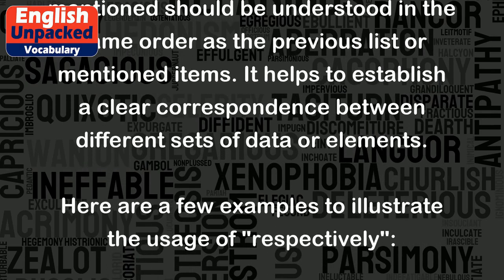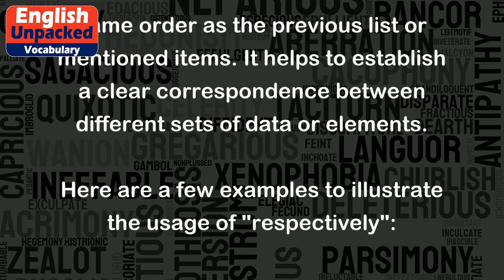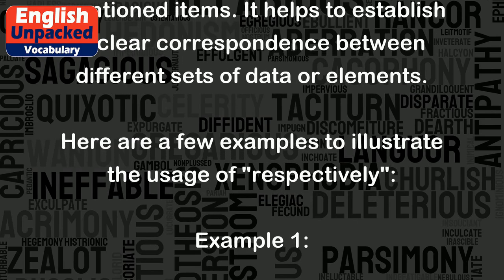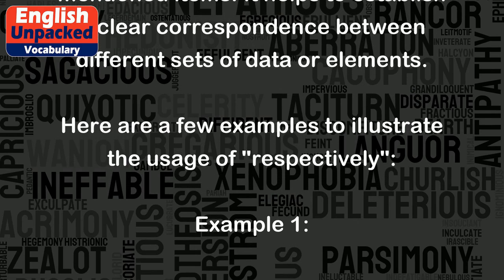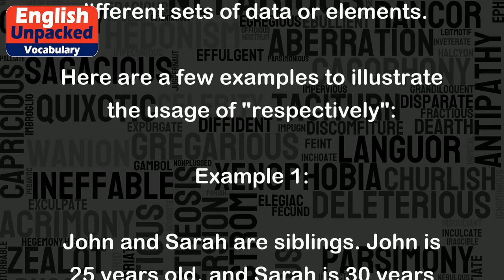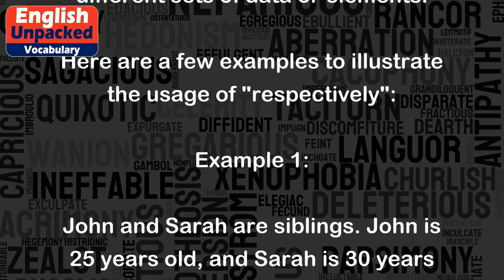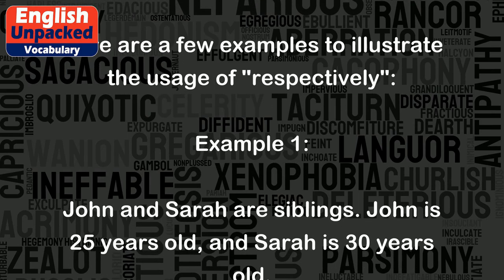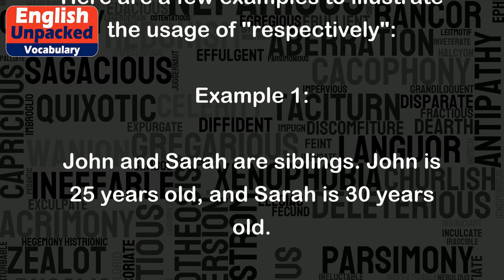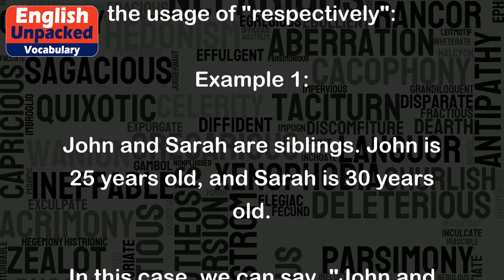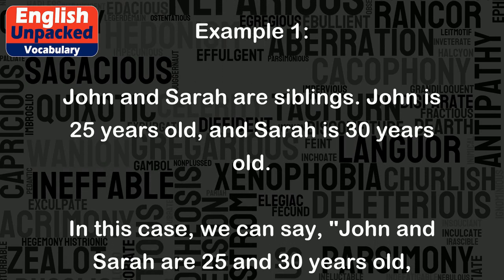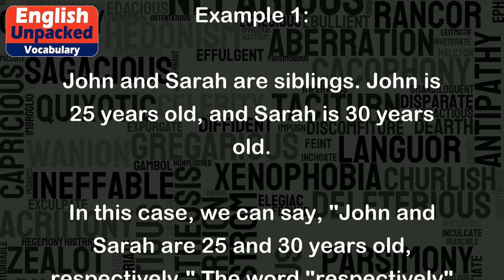Here are a few examples to illustrate the usage of 'respectively.' Example 1: John and Sarah are siblings. John is 25 years old and Sarah is 30 years old. In this case, we can say: John and Sarah are 25 and 30 years old, respectively.